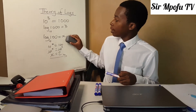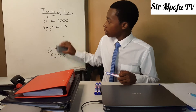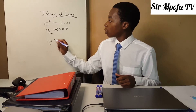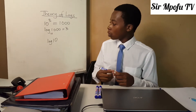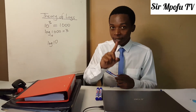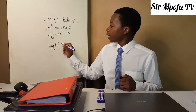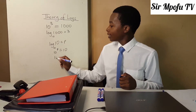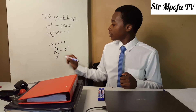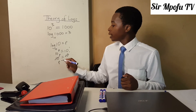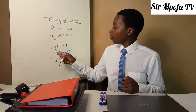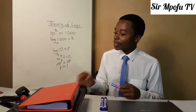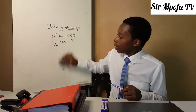Let us do one more example in base 10, then we'll do something that won't be in base 10. Let's say you are asked to find log 10. Take note of your base — if there is no base, it is automatically base 10. Let p be the answer, so 10 to the power of p equals 10. The bases are already the same, and 10 to the power of 1 equals 10, so p equals 1. Therefore log 10 in base 10 equals 1. If you punch log 10 on your calculator, your answer will be 1.